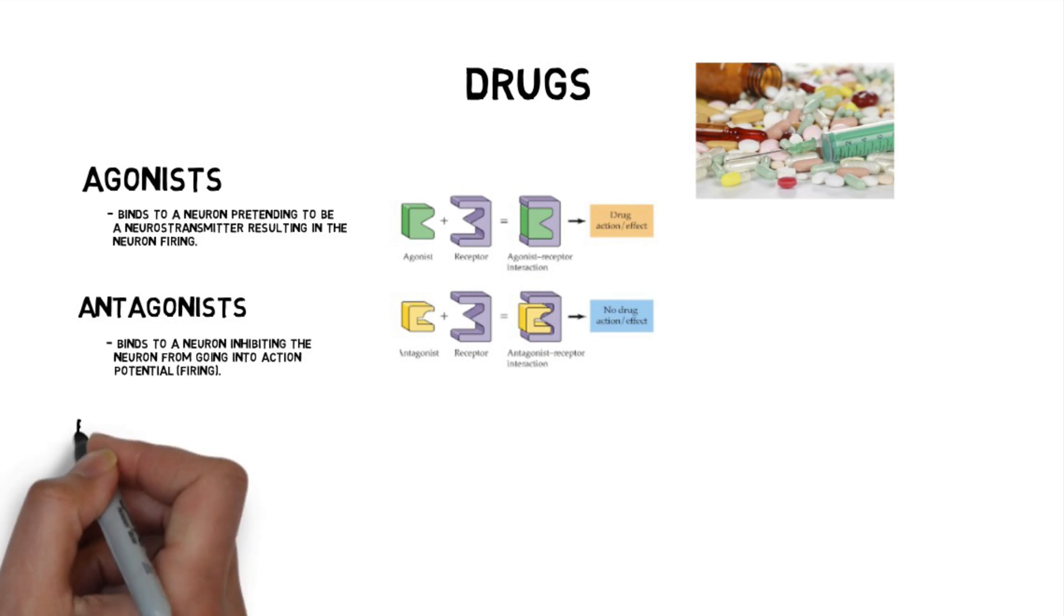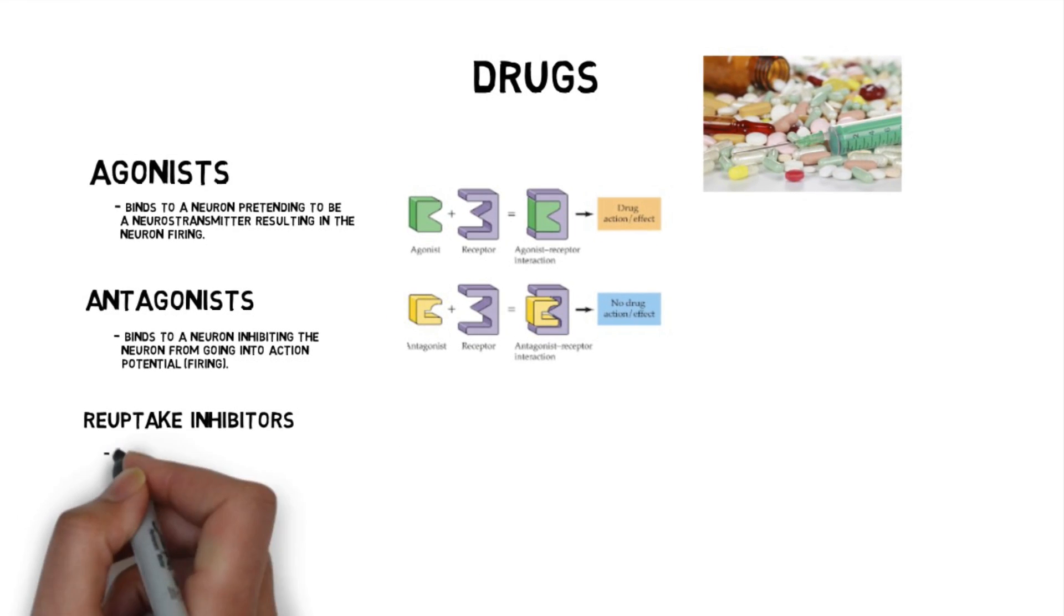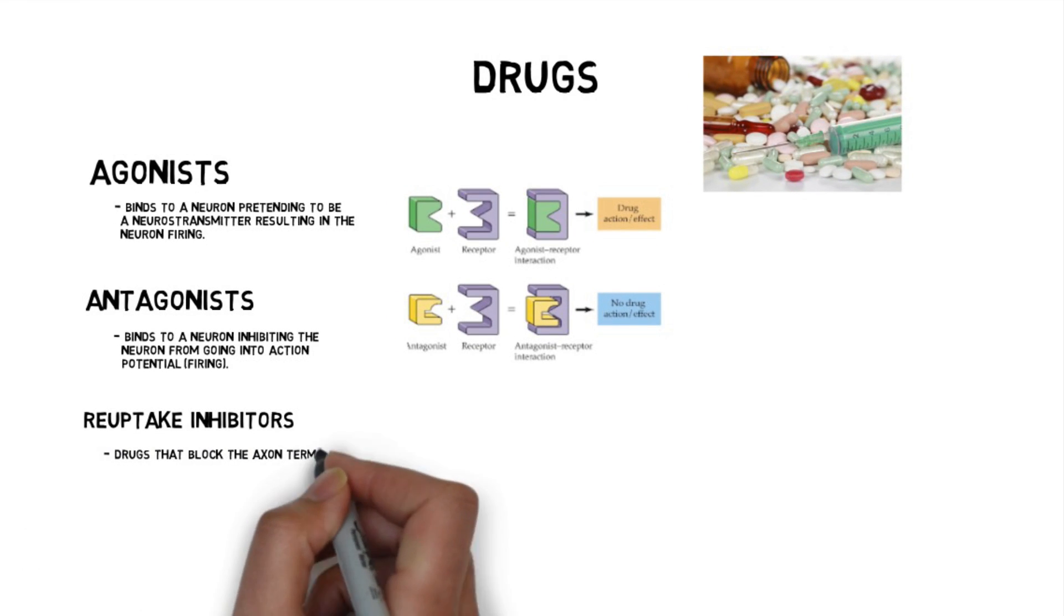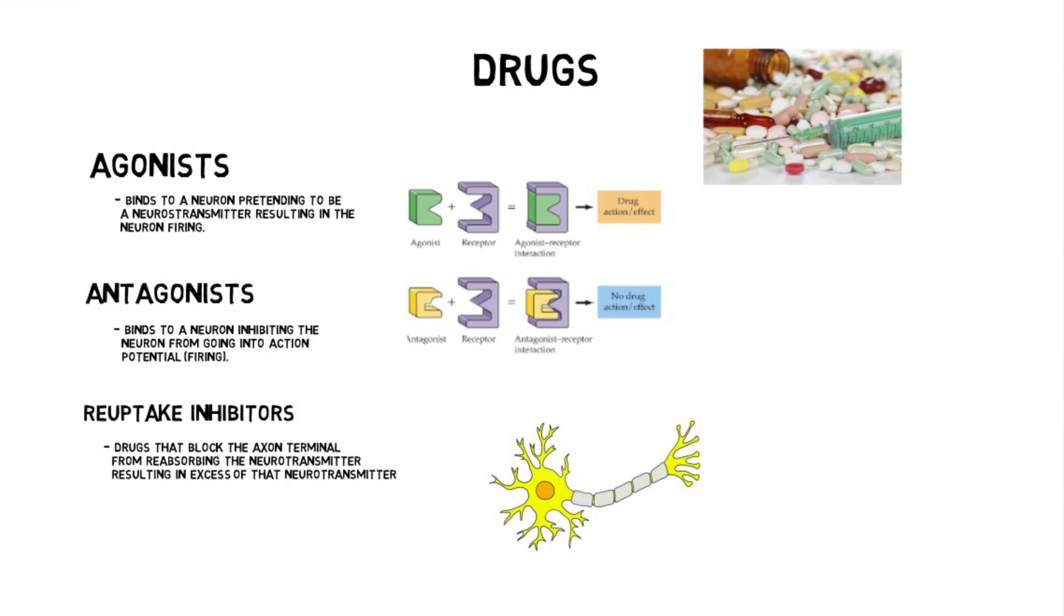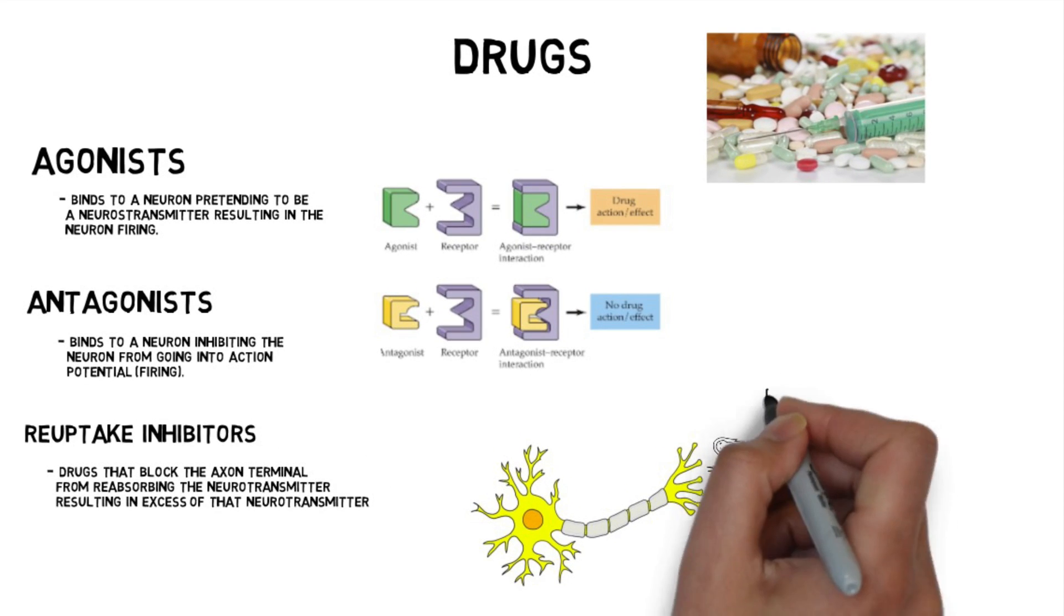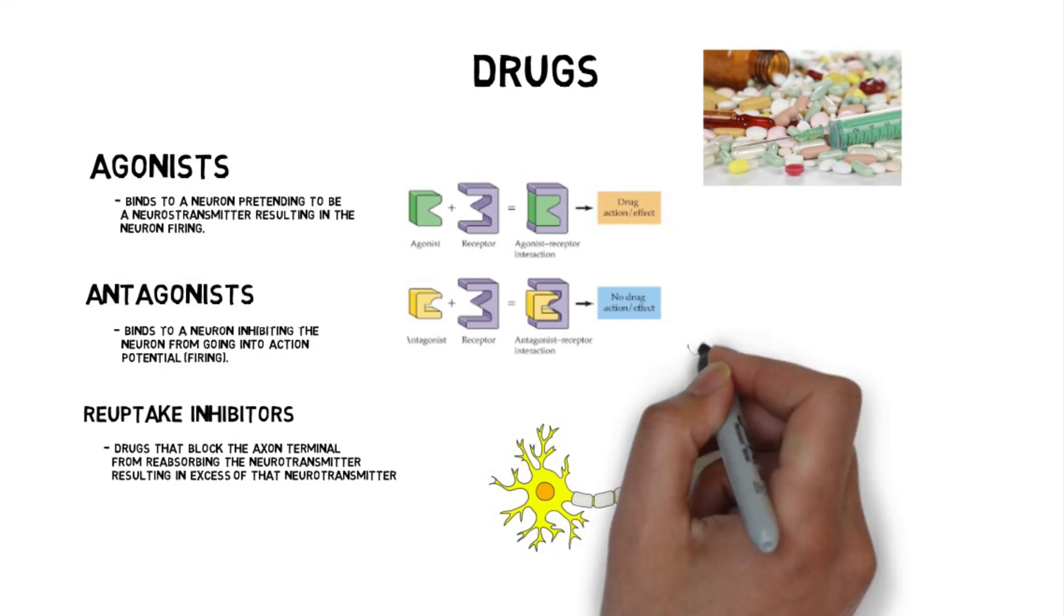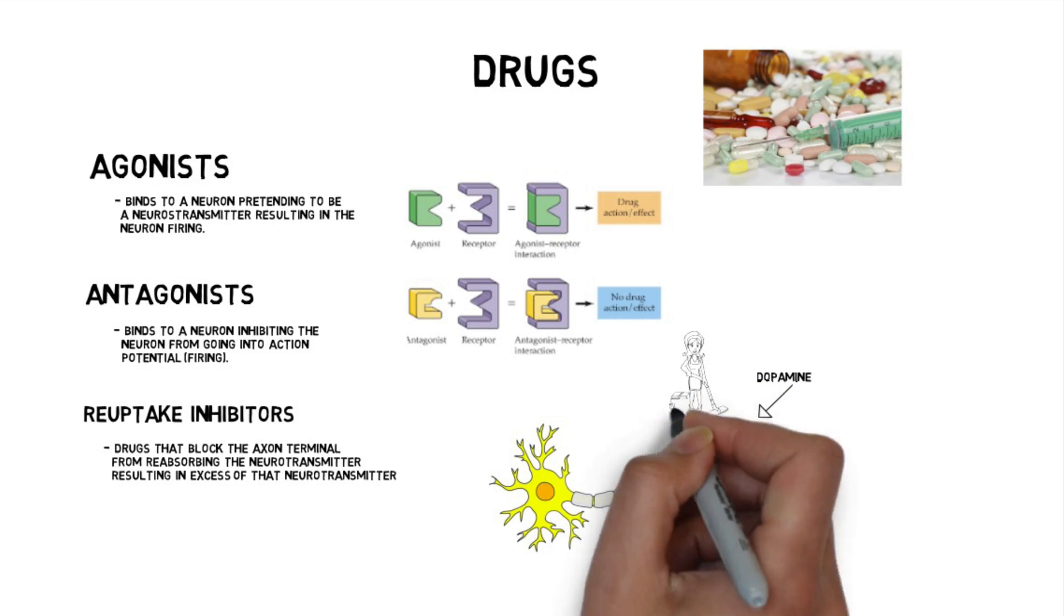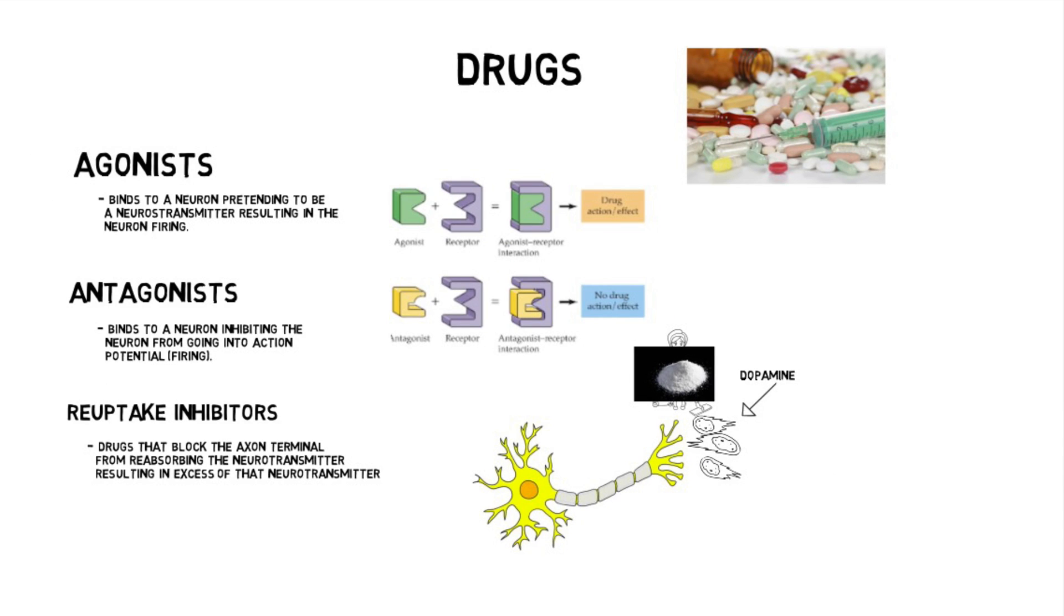The third thing a drug can do is it can inhibit reuptake. In other words, when the axon terminal tries to suck up that leftover neurotransmitter, some drugs block the axon terminal so it can't suck up that leftover neurotransmitter, leaving too much in the synapse, causing us to feel the effect of that drug. An example would be cocaine. Cocaine is a dopamine reuptake inhibitor. So when a neuron's firing dopamine, the axon terminal fires it out, and then it tries to reuptake it or suck it back up. The cocaine blocks the axon terminal from sucking up leftover dopamine, thus we have too much dopamine in the synapse, thus we get high on cocaine.